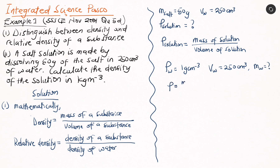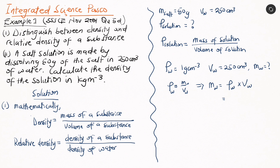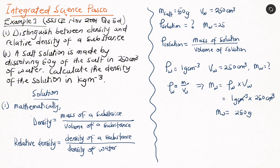We know that density equals mass over volume, so mass of water equals density of water multiplied by volume of water. That gives us 1 gram per cm³ multiplied by 250 cm³ — the cm³ units cancel — giving us 250 grams. So the mass of water is 250 grams.